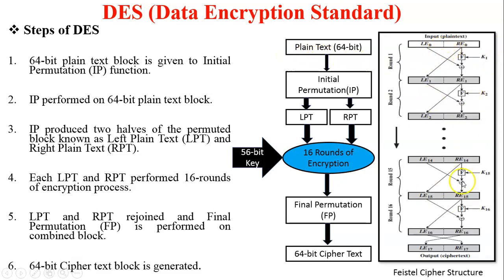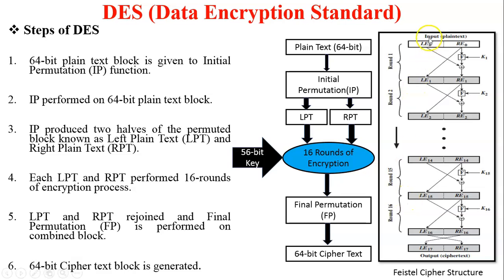Now this is for reference — this is the Feistel Cipher Structure. You can see these are the 16 rounds of encryption. As per the Feistel Cipher Structure, this is round 1, round 2, round 3, up to round 16. There are 16 different rounds performed in the Feistel Cipher, and DES also uses the Feistel Cipher Structure — this kind of 16 rounds is performed in DES.